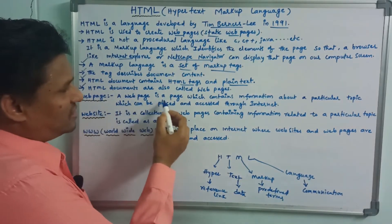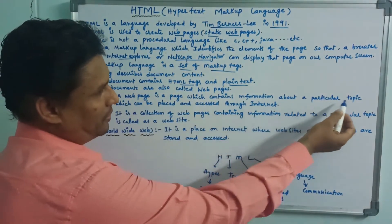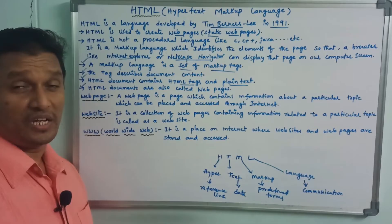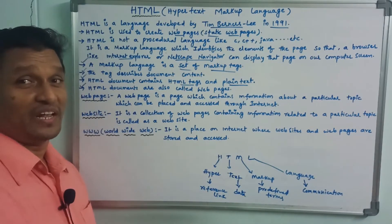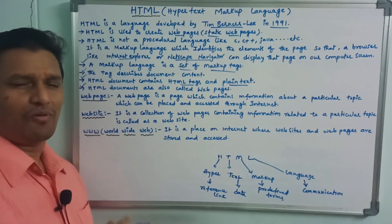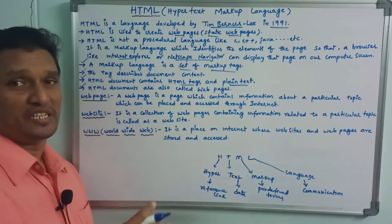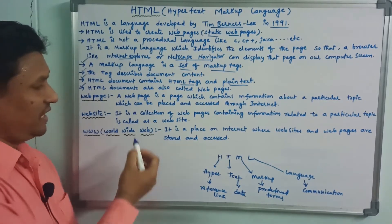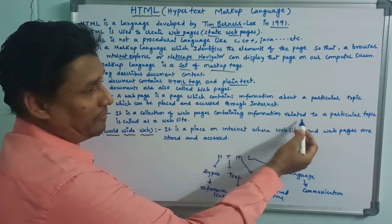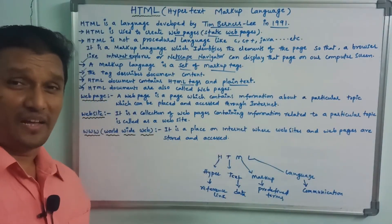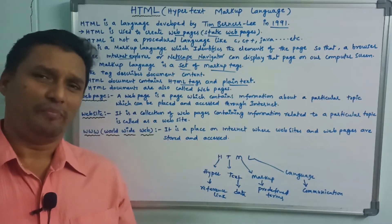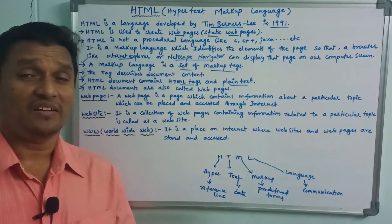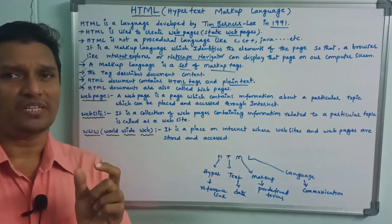What is a web page? A page contains information about a particular topic, which can be placed and accessed through the internet. You can store information about a topic as a web page. A website is a collection of web pages containing information related to a particular topic. Web pages combined together form a website design.